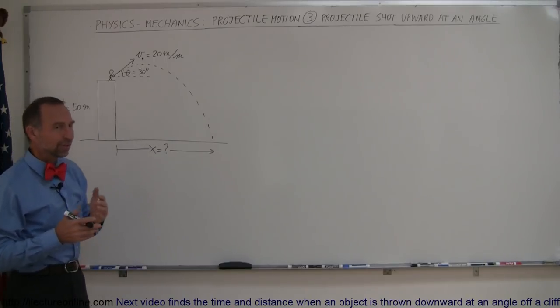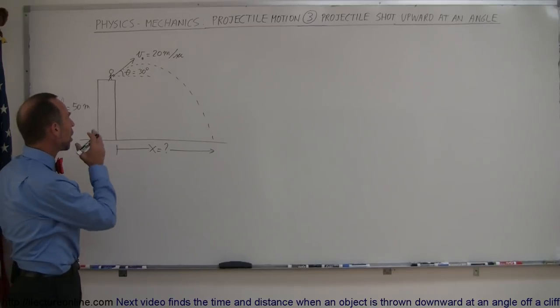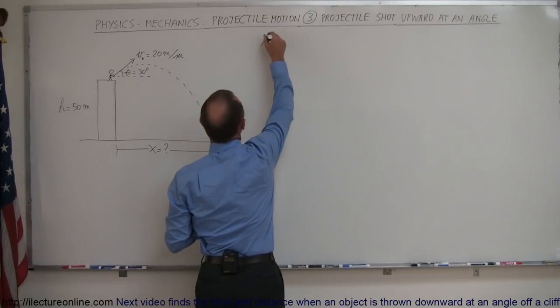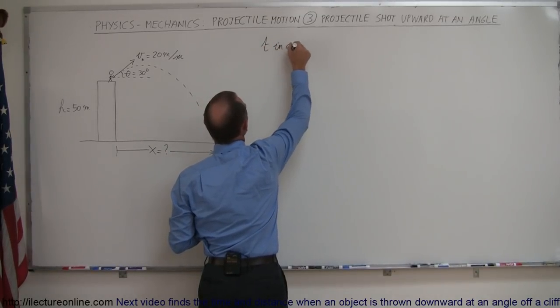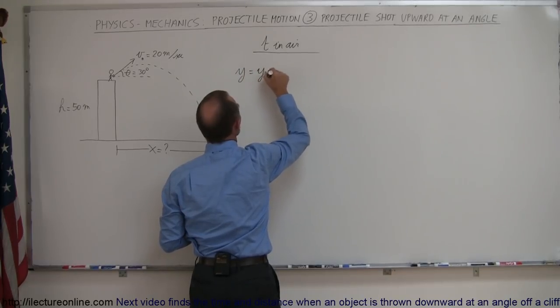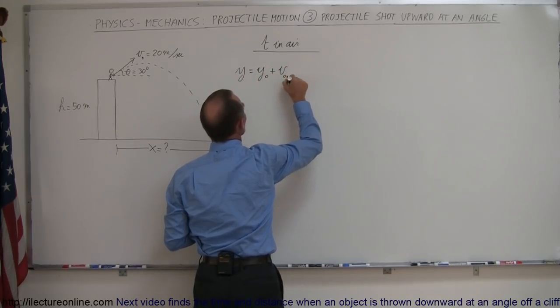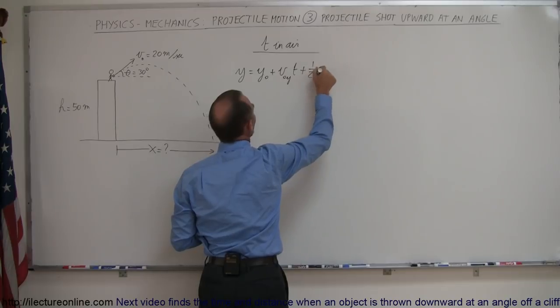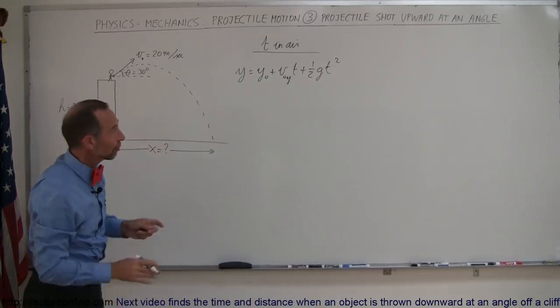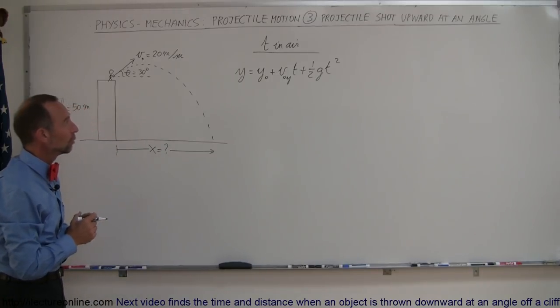But regardless of what's happening here we always start out with the concept how long will that projectile stay in the air. And so the question becomes t in the air and the equation we use for that is y equals y sub nought plus v sub nought in the y direction times time plus one-half g t squared. Typically we find the time in the air first and that's the equation we then need to find that.